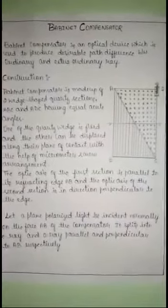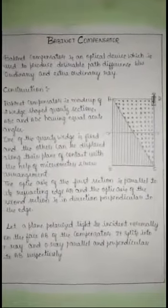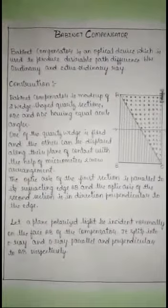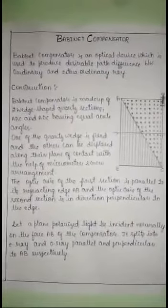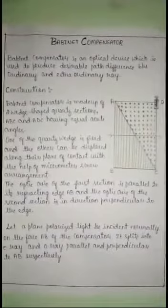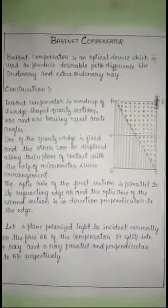Babinet Compensator. The Babinet compensator is an optical device which is used to produce a desirable path difference between the ordinary ray and extraordinary ray.